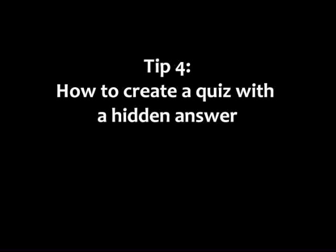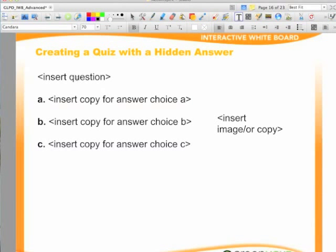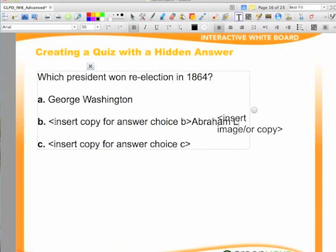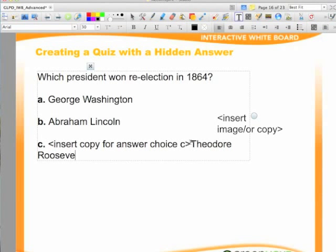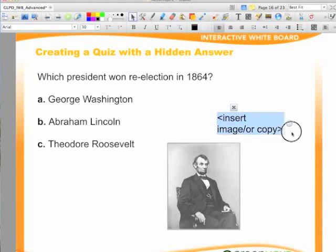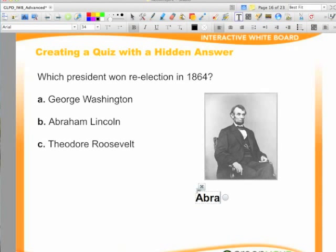Tip 4: how to create a quiz with a hidden answer. To create a quiz with a hidden answer, first insert the copy for the quiz. I've created placeholders on the page to indicate where I want the copy to appear. I'm going to begin by typing the copy for the question and answer choices. The correct answer is B, Abraham Lincoln. I'm going to drag an image from my desktop onto the page and delete the placeholder copy. Next, I'm going to use the text tool to create a label. I want the image and label to be hidden when the page opens, so I'm going to group the image and label.